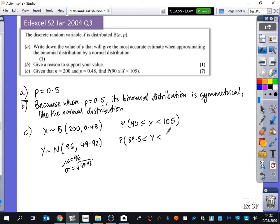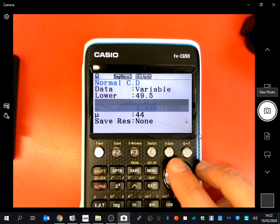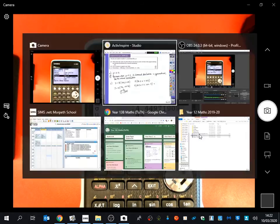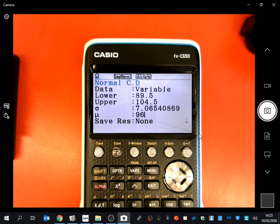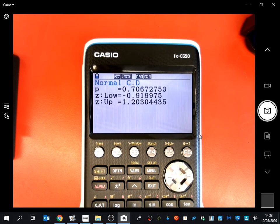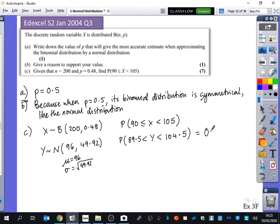Now that we've got to this statement, you've got the mean is 96, the standard deviation is root 49.92, your lower boundary and your upper boundary, it just becomes a case of being able to type it into your calculator. We've got that the lower boundary was 89.5, the upper boundary was 104.5, the standard deviation was the square root of 49.92, and the mean was 96. And so we get 0.7067.